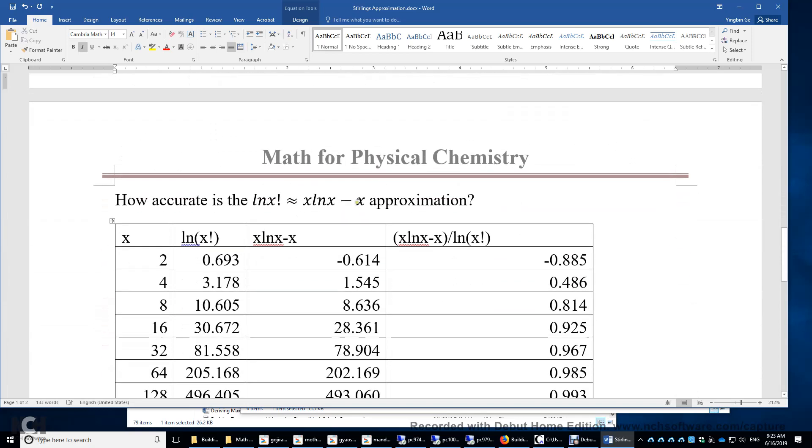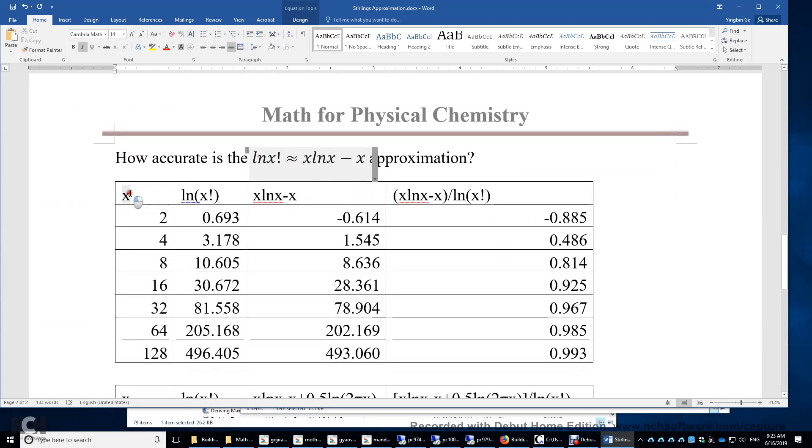Let me show you a table here. All right. So this is the value of x. So it's 2 to the power of 1, 2 to the power of 2, all the way 2 to the power of 7. And we're computing this ln x factorial. So those are the exact values. Now we're going to make approximations. We'll use x times ln x minus x. We got these numbers.